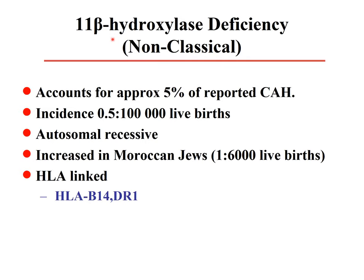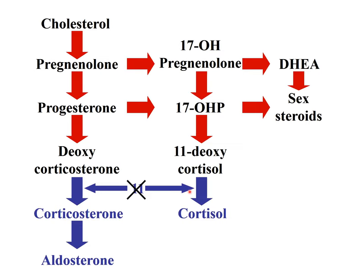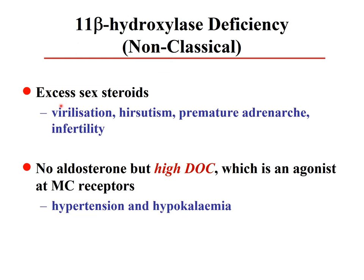The 11-beta-hydroxylase deficiency is the non-classical form, relatively rare (about 1 in 200,000 births, slightly increased in Moroccan Jewish population), accounting for about 5% of adrenocortical hyperplasia cases. This is a distal-type block: no cortisol, high ACTH, and everything shifted toward androgens. Deoxycorticosterone accumulates and has mineralocorticoid action — causing hypertension and hypokalemia, unlike 21-hydroxylase deficiency.